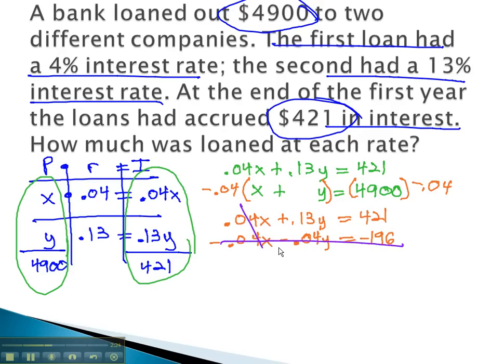Adding these equations together will eliminate the x, giving us .09y equals 225. To get the y alone, we simply divide by .09, and we find out that y is equal to 2500.